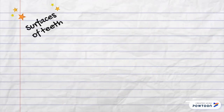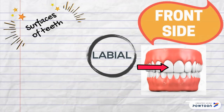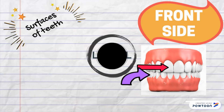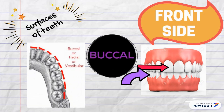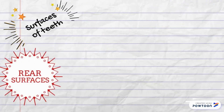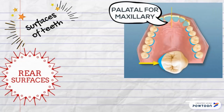Now let's speak about the surfaces of teeth. For the front side of the teeth, there are labial surfaces, which are for incisors and canines, and buccal or facial surfaces for the molars and premolars, which are the posterior teeth. Up next, let's speak about the rear surfaces. There are palatal surfaces for the maxillary, or upper jaw.